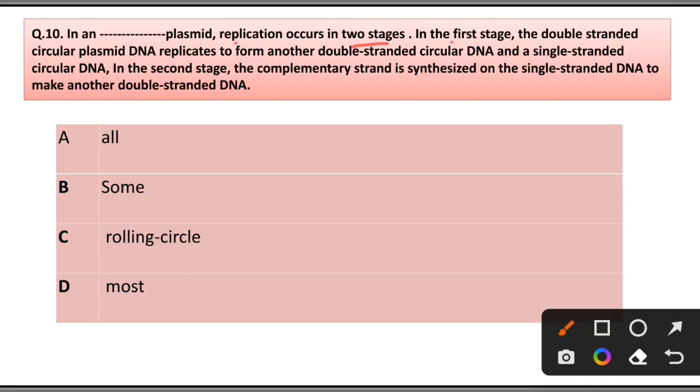Question number 10: In a plasmid, replication occurs in two stages. In the first stage, the double-stranded circular plasmid DNA replicates to form another double-stranded circular DNA and a single-stranded circular DNA. In the second stage, the complementary strand is synthesized on the single-stranded DNA to make another double-stranded DNA. A) All, B) Some, C) Rolling-circle, D) Most. Answer is option C, rolling-circle.